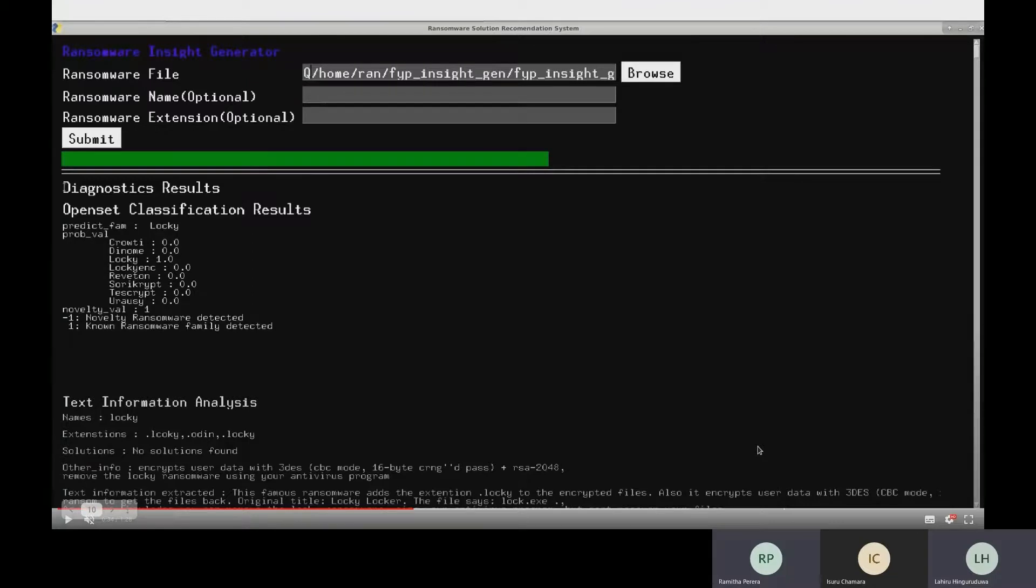As you can see in the first one, the open set classification results, the ransomware is detected to be Locky and is precisely recognized as a Locky family of ransomware.